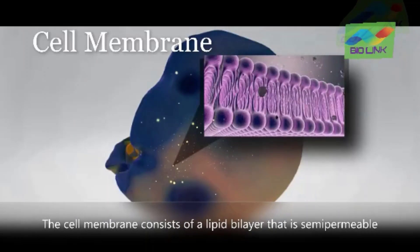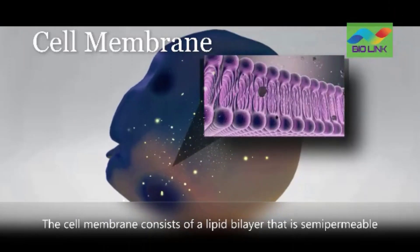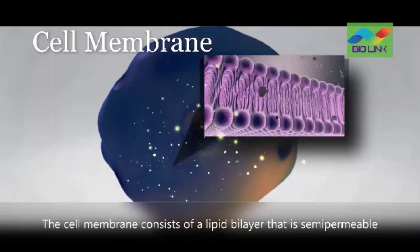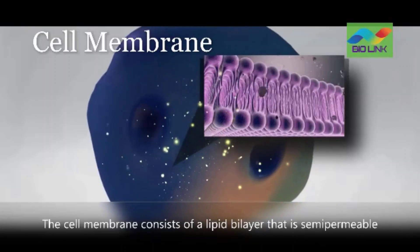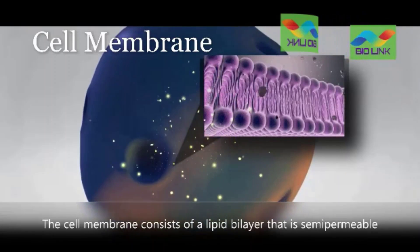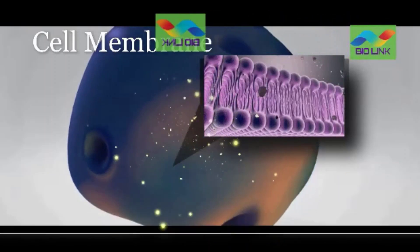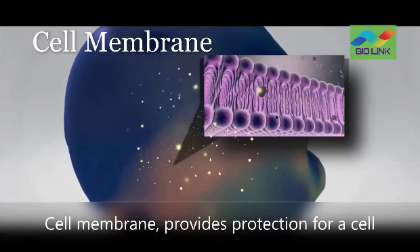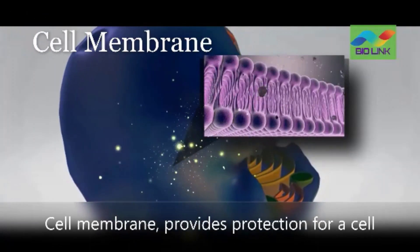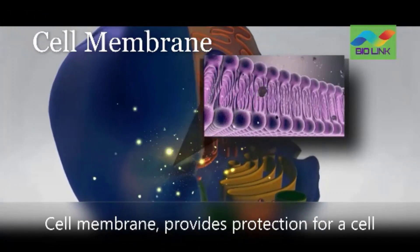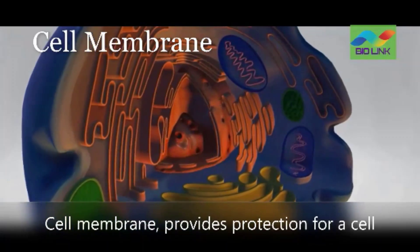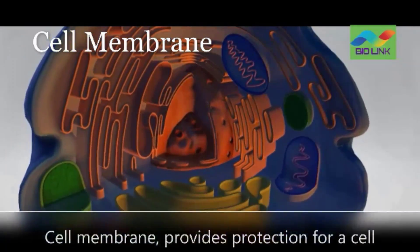Cell membrane: The outermost layer in animal cells and the second layer in plant cells, it provides protection for the inner parts of the cell. The cell membrane is a selectively permeable barrier and it regulates the materials that enter and leave the cell.